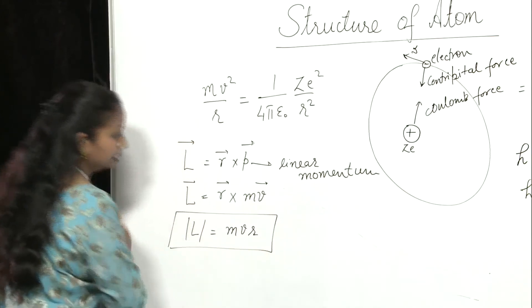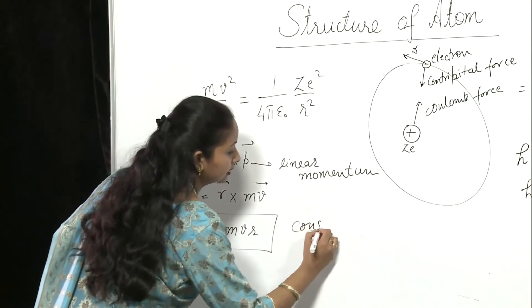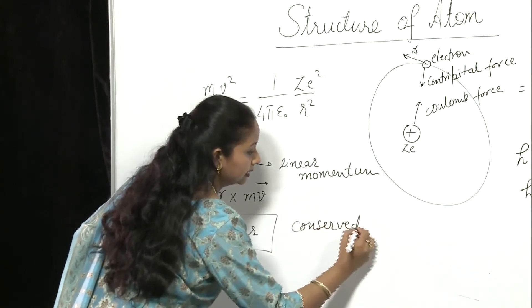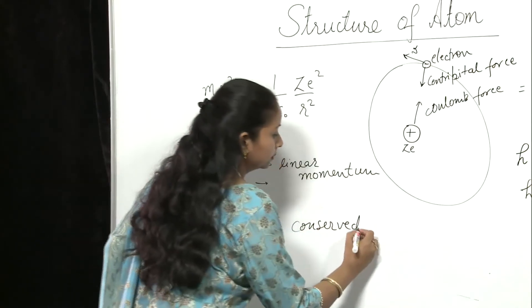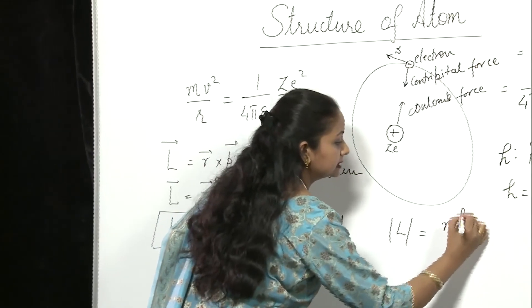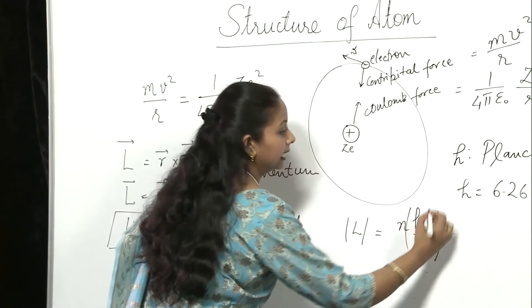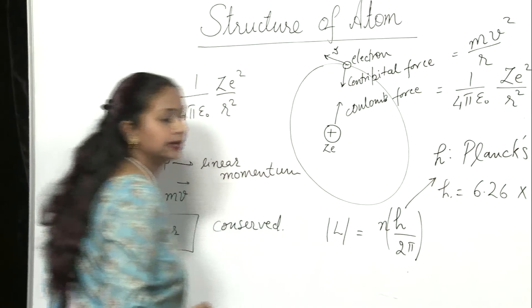As we know that orbital angular momentum should be conserved. And according to Bohr, this magnitude of orbital angular momentum is the integral multiple of h/2π and again this h is Planck's constant.